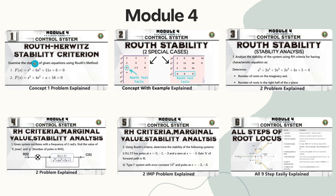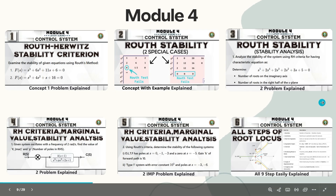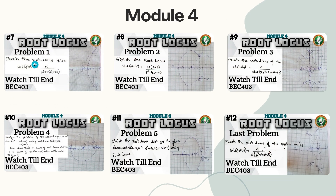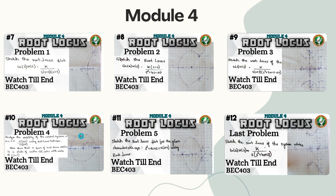From Module 4, we cover the Routh-Hurwitz stability criterion, including the Routh array, two special cases, and related problems. Next is root locus, which is very important. To understand root locus, you must first understand all the steps — I've made a dedicated video explaining each step in detail. You should watch that video thoroughly without skipping. Based on that, six different and unique root locus problems are solved, and understanding all six will make solving root locus problems very easy.